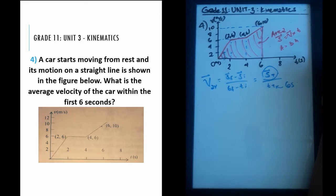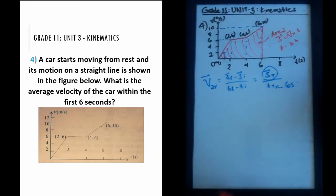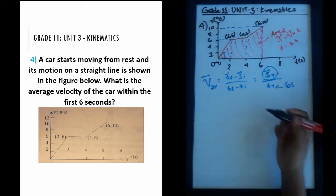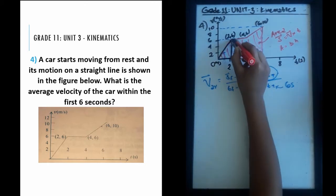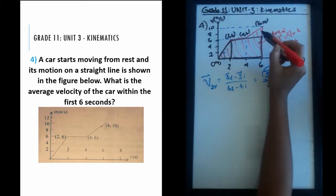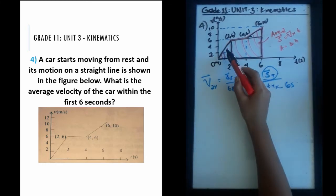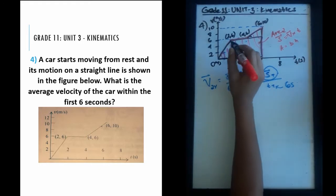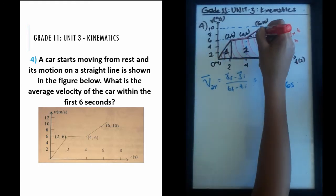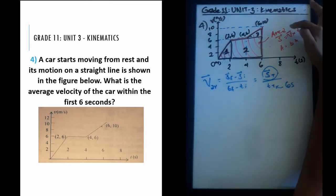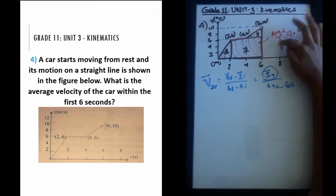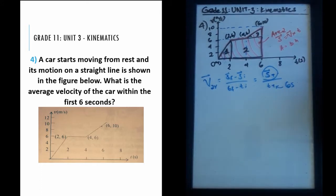The shape under the graph isn't one simple shape, so let's split the area into three separate parts we know how to find. We have two triangles and a rectangle. Let's call them shape one, two, and three, and find the area of each. Remember, finding the area means finding the displacement, and once we find the displacement we can find the average velocity.